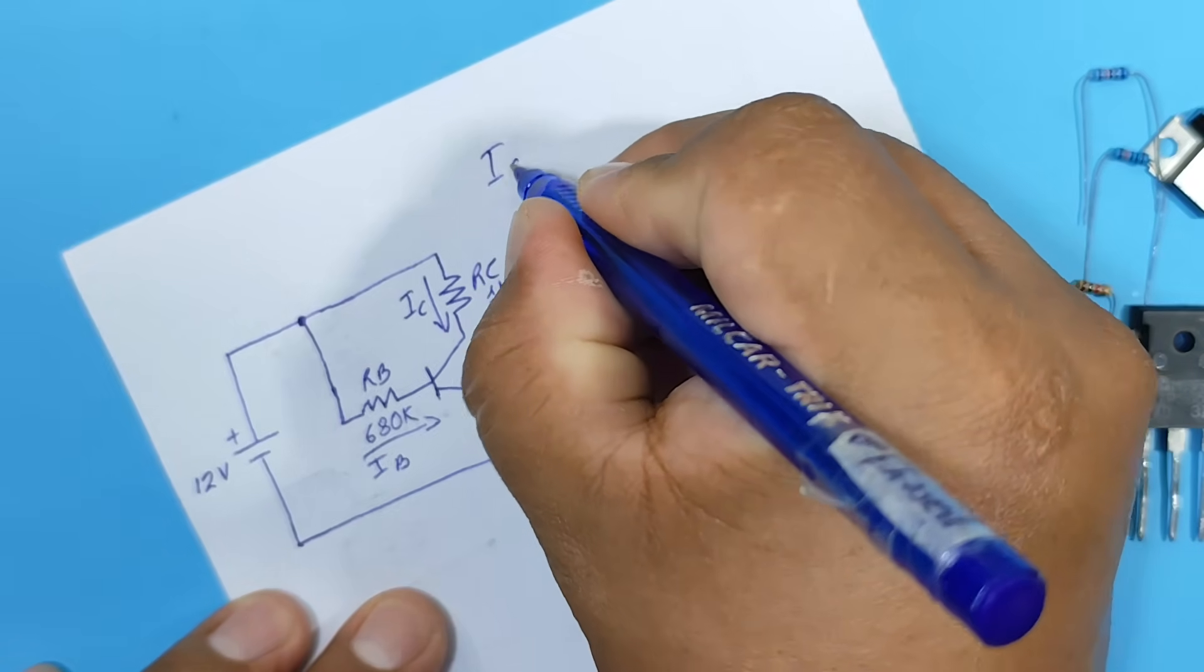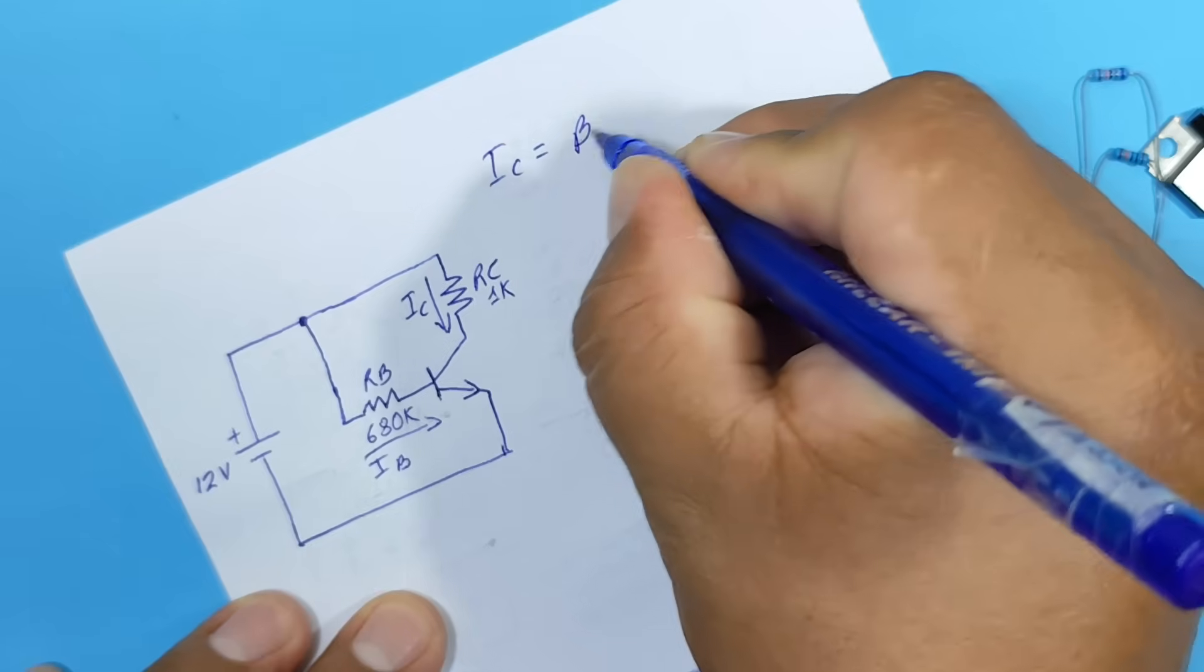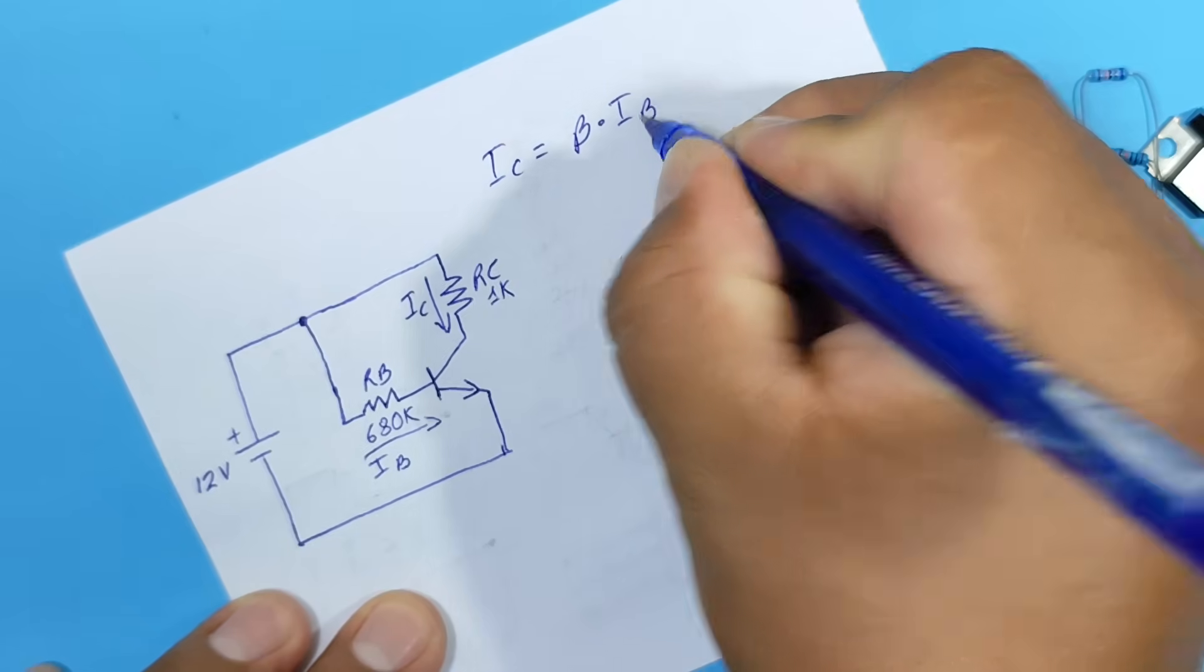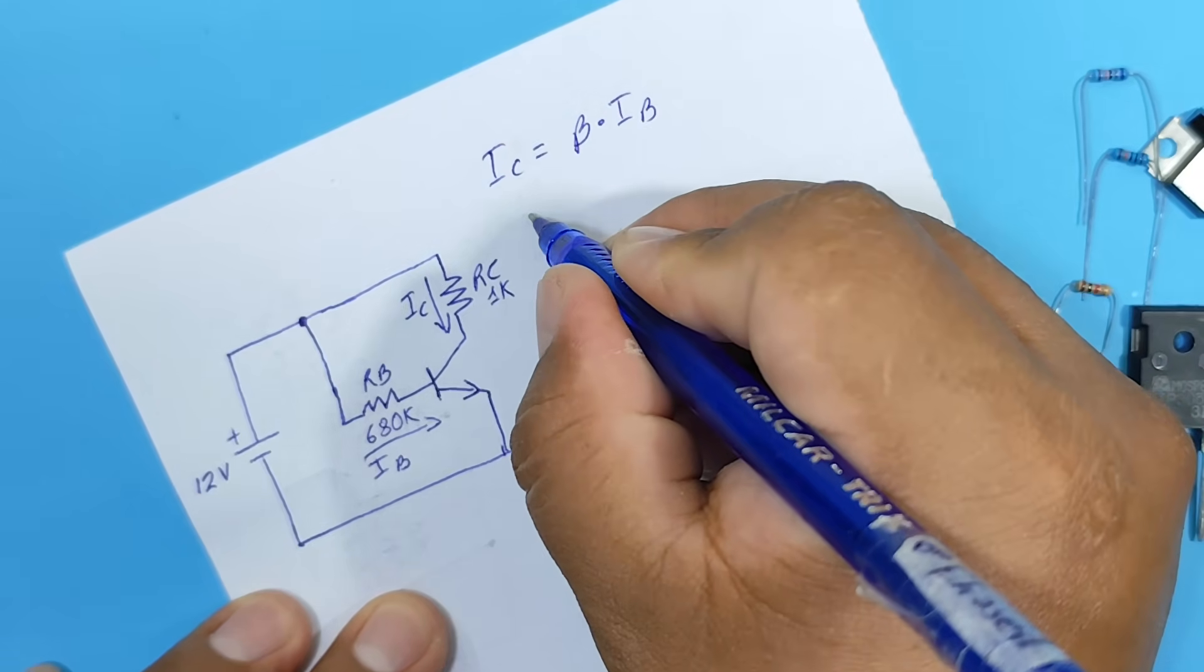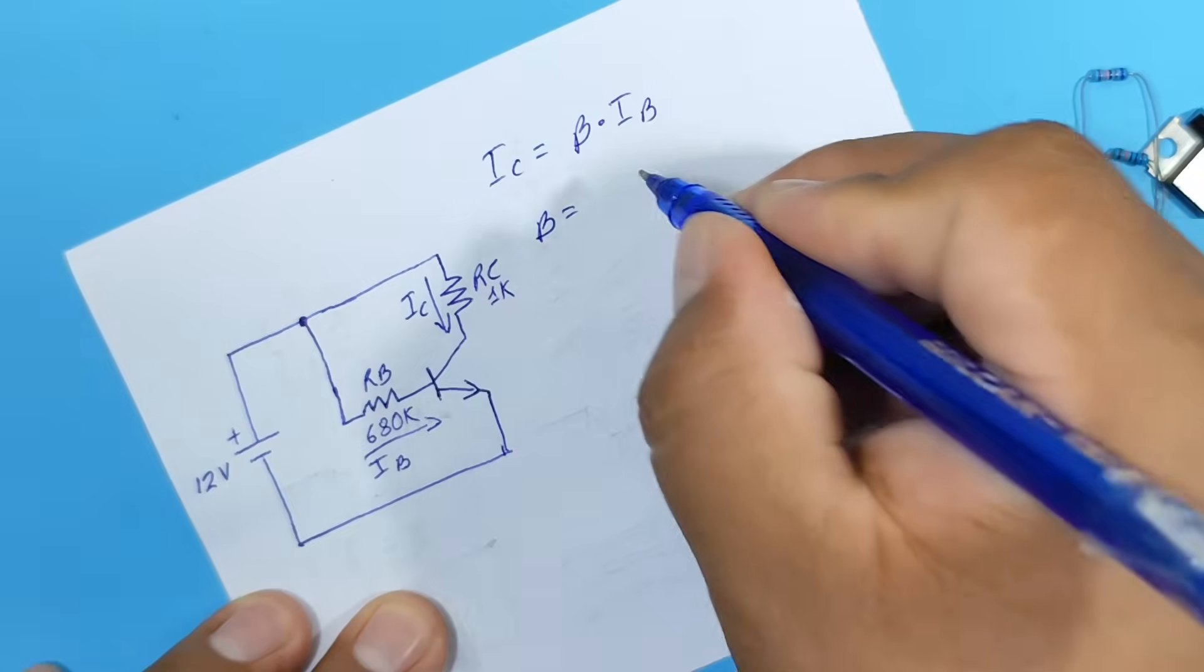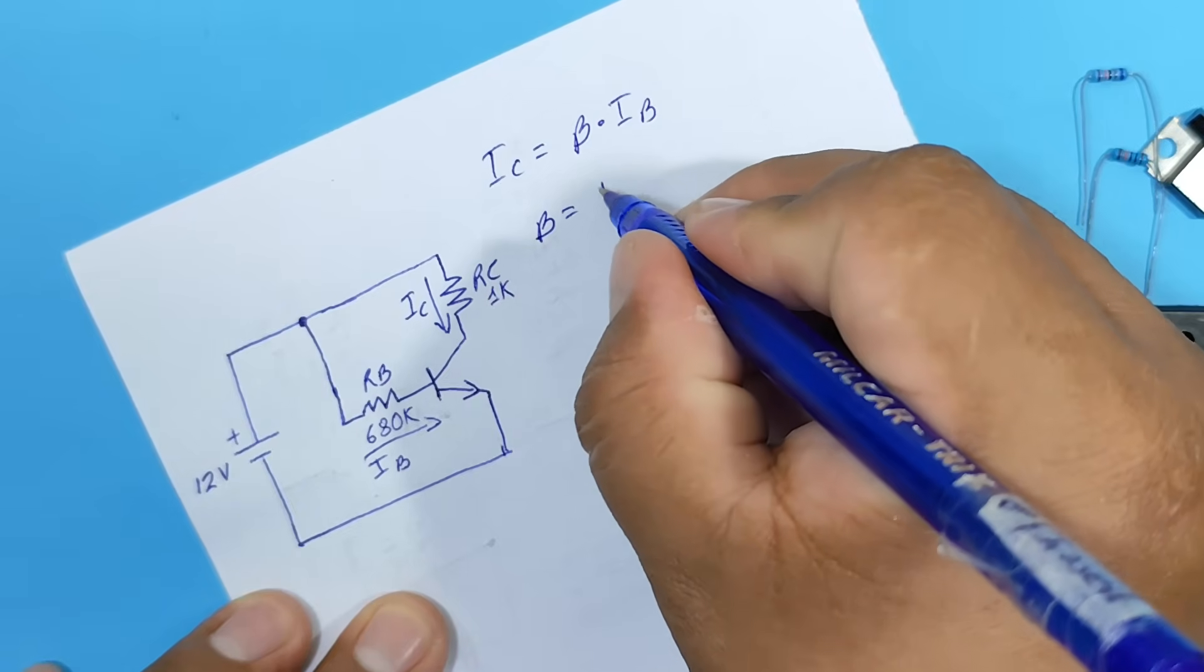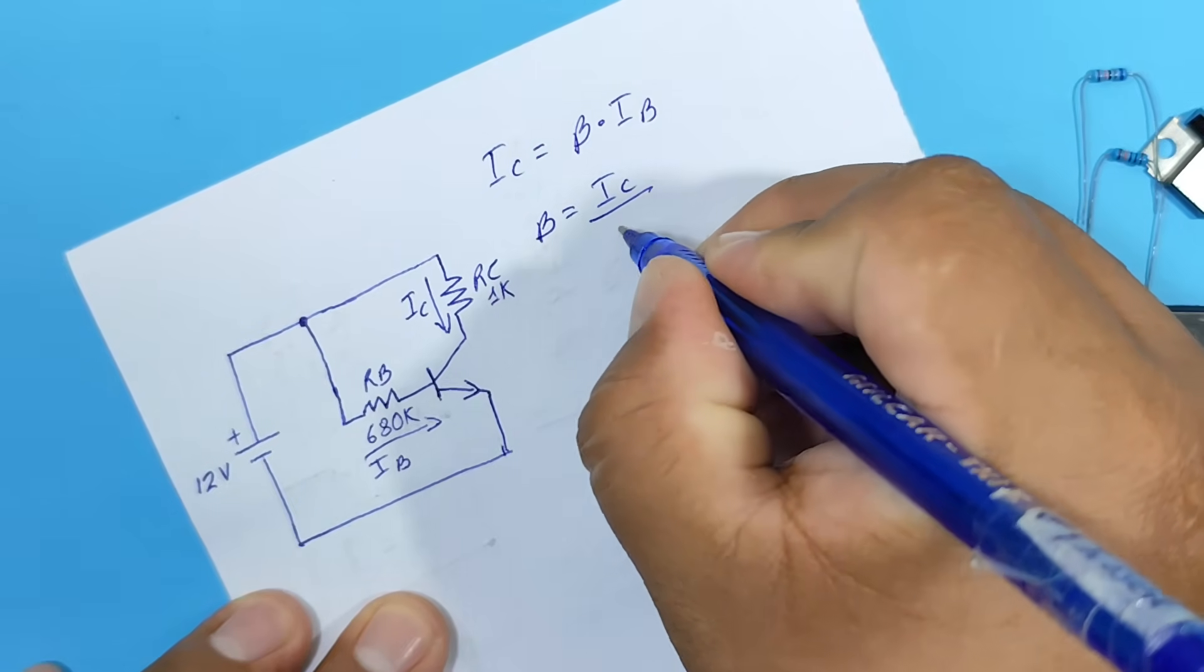Since the collector current is equal to the gain multiplied by the base current. And from this, we get the formula for the gain, or beta. This will be equal to the collector current divided by the base current.